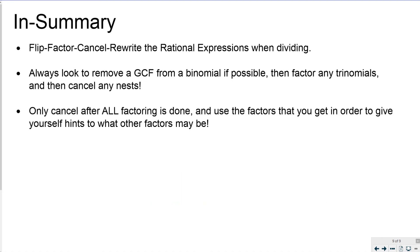Thanks for hanging in there — some complicated problems, but in summary the process is Flip, Factor, Cancel, Rewrite. It's just the multiplication process with an added flip step first. Always look to remove a GCF from a binomial, then factor any trinomials, and only cancel after all factoring is done. Use factors you already have as clues for remaining factorizations. That's it for the video — thanks for watching!